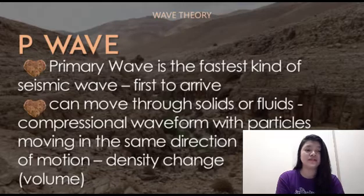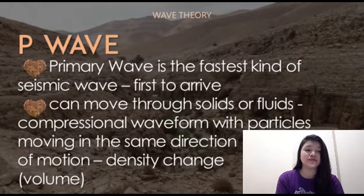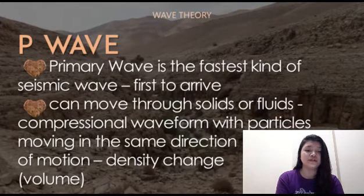The P wave, or primary wave, is the first kind of body wave. It is the fastest kind of seismic wave, and consequently the first to arrive at a seismic station. The P wave can move through solid rocks and fluids like water or the liquid layers of the earth. It pushes and pulls the rock it moves through, just like sound waves push and pull the air. P waves are also known as compressional waves.